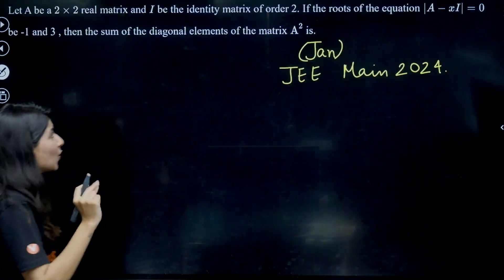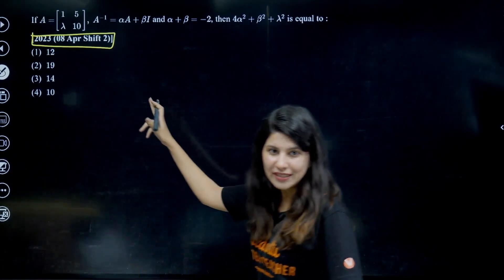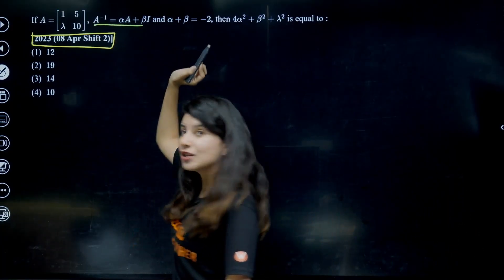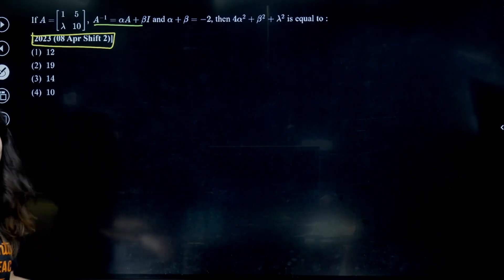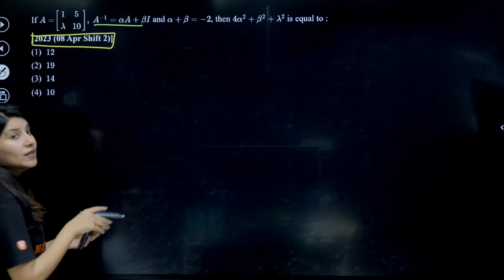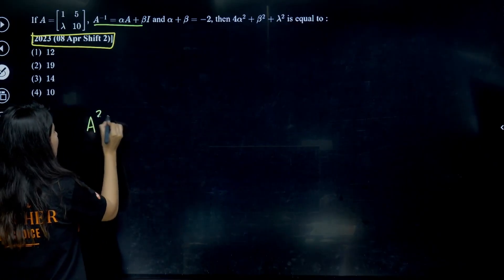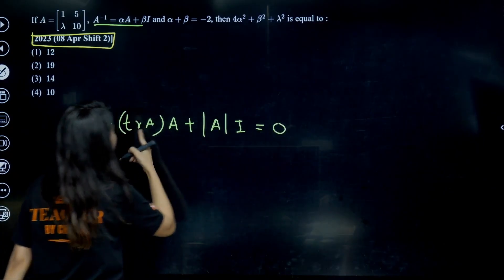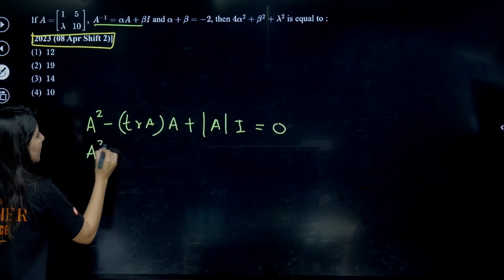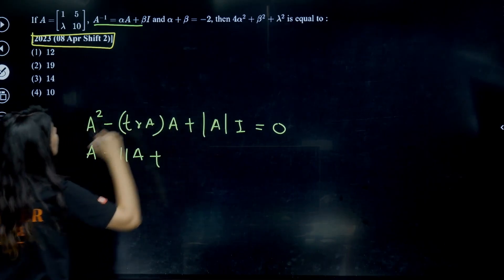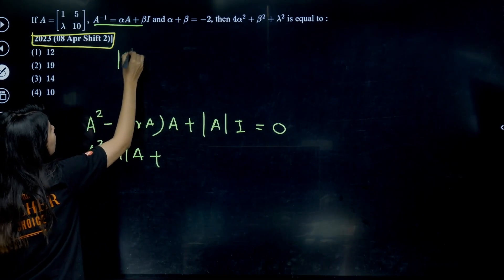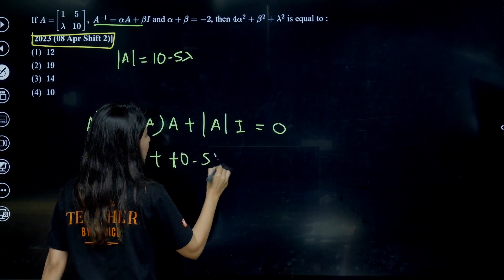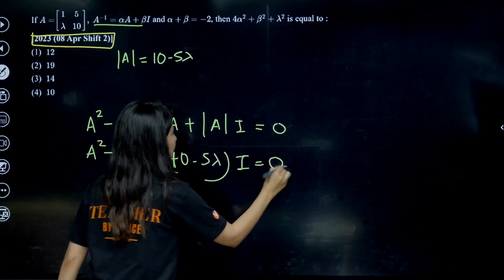Now question time — JEE Main 2023. Given matrix A and an equation involving A⁻¹, we directly write the characteristic equation: A² − trace(A)·A + det(A)·I = 0. Trace of A is 1 + 10 = 11, so we have A² − 11A + (10 − 5λ)I = 0, where det(A) = 10 − 5λ.